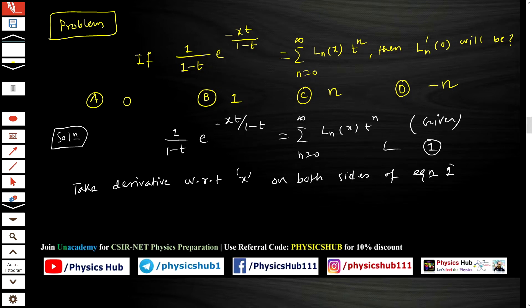Why are we doing this? Because we need to calculate the ln' value, and ln is given as a function of x, so we need to take the derivative otherwise we won't be able to calculate ln'.